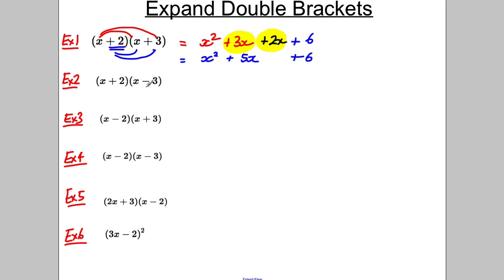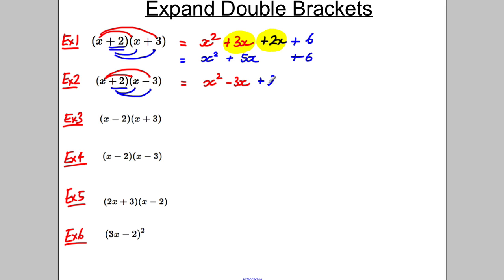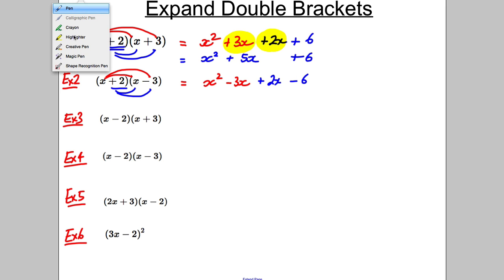Next one — notice the numbers are the same but there's a negative here instead of a positive. Same idea: x multiplied by x, x multiplied by negative 3, then positive 2 multiplied by x, and positive 2 multiplied by negative 3. x multiplied by x is x squared, x multiplied by negative 3 is negative 3x, positive 2 multiplied by x is positive 2x.